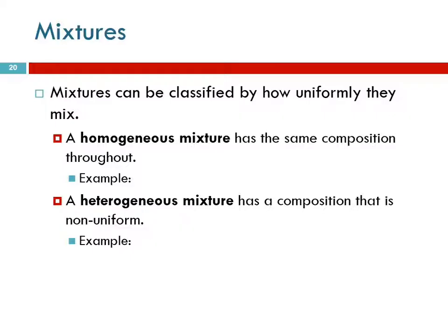Kool-Aid is a great example of a homogeneous mixture. You make Kool-Aid and you've got sugar, bright food coloring, and water. You mix it up and it's all red — Cherry Kool-Aid — red at the top, red at the bottom, and sweet all over. It all looks the same. But if we zoom in, we see there are sugar particles, water molecules, and food coloring molecules. They can vary in proportion — some people make Kool-Aid with less sugar — but it looks the same throughout. It's a mixture, but uniform.